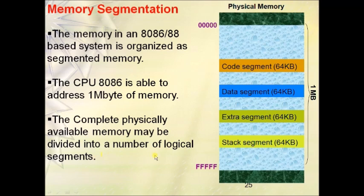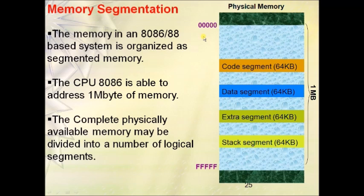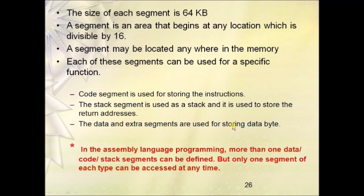The complete physically available memory may be divided into a number of logical segments. The starting address is five zeros and the ending address is five F's in hexadecimal. If you represent the same address in binary form, it gives you a 20-bit address, which is the exact location where the operand resides. With a 16-bit register alone we cannot access the full 20-bit address.